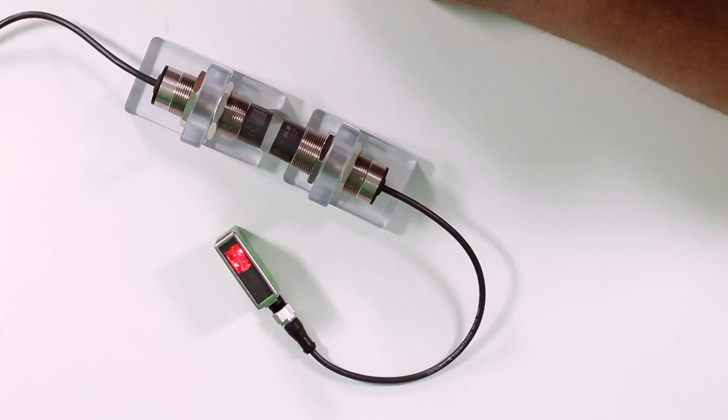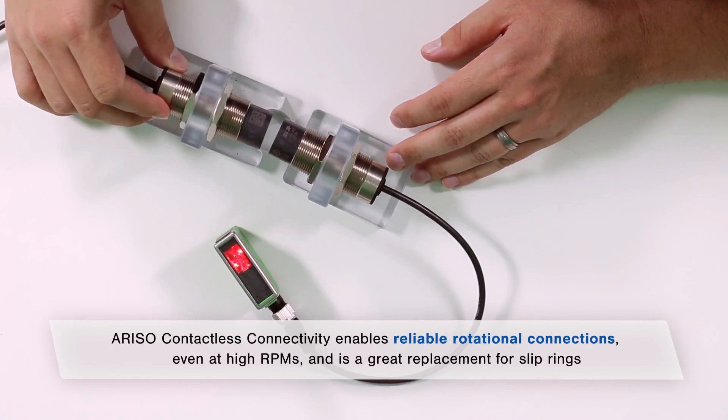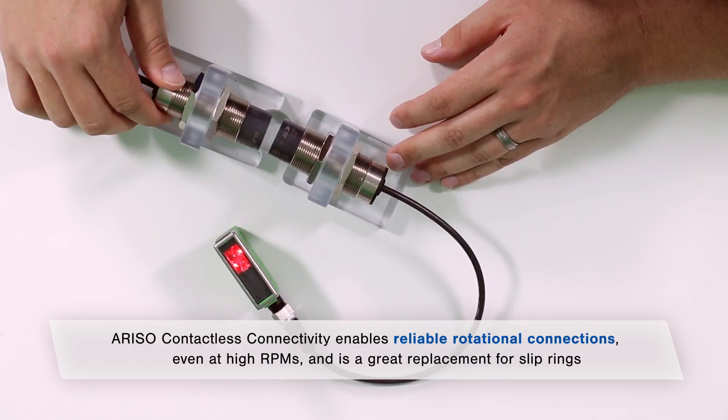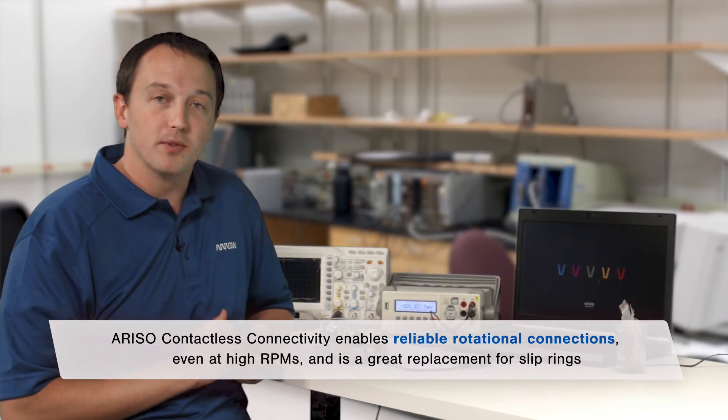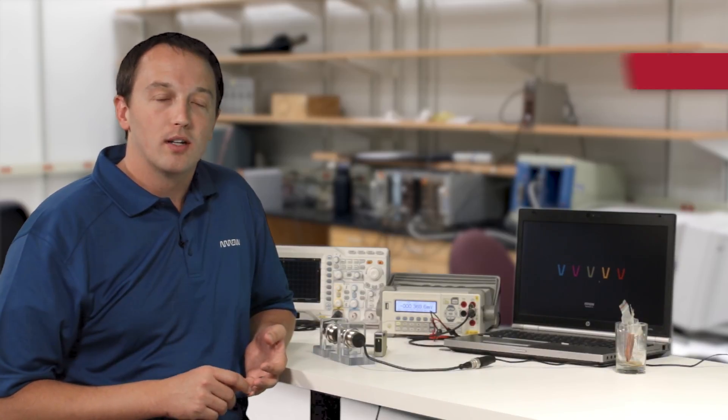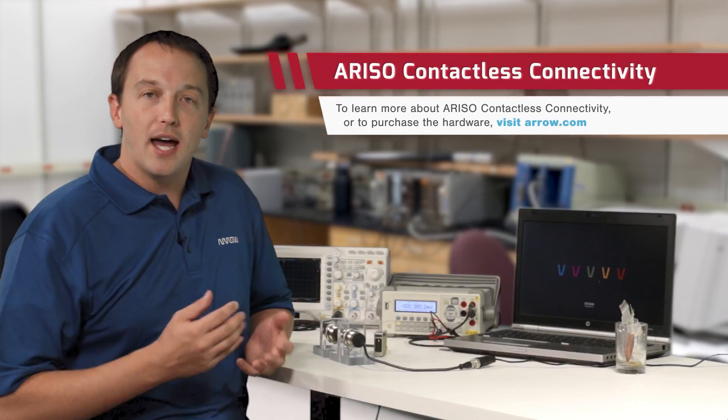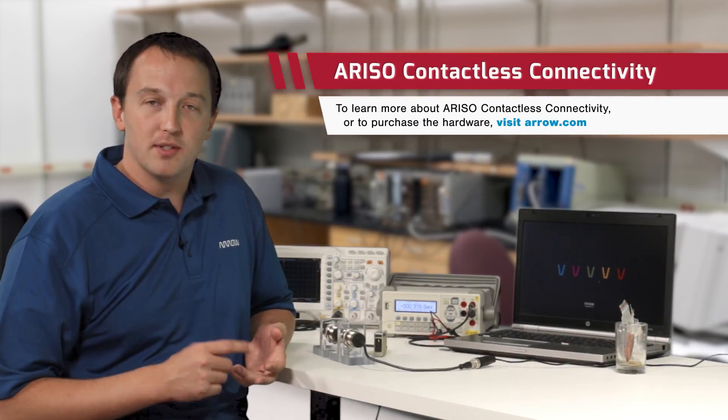Another benefit of ARISO is it allows for rotation. As you can see, as I twist the transmitter, the light stays on. That will work even at very high RPMs. If you have a CNC or lathe or laser printer drums, ARISO will continue to provide power and data as they rotate.